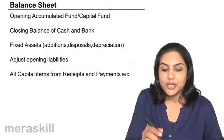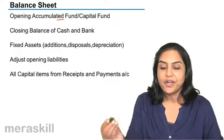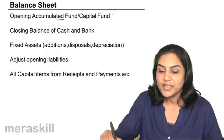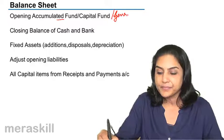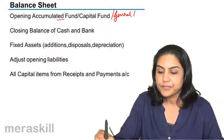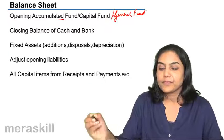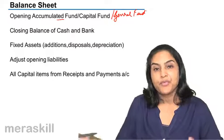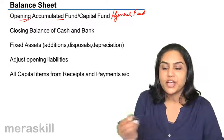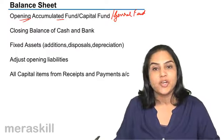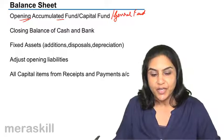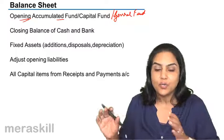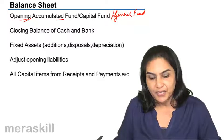For the balance sheet, we start off with the opening accumulated fund, or capital fund, or general fund as it is sometimes called. If it is an existing NPO, there would be an opening balance of this accumulated fund. If it is the first year of operation, whatever surplus is earned will go towards the accumulated fund.